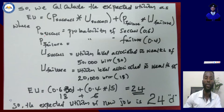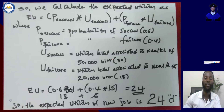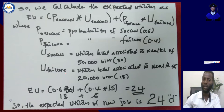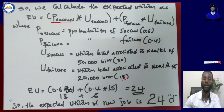Where p(success) is the probability of success at 0.6, p(failure) is the probability of failure at 0.4, u(success) is the utility level associated with wealth of 50,000 per which is 30, and u(failure) is the utility level associated with wealth of 20,000 per which is 15. By inserting these values into the formula, we can calculate the expected utility of the new job.